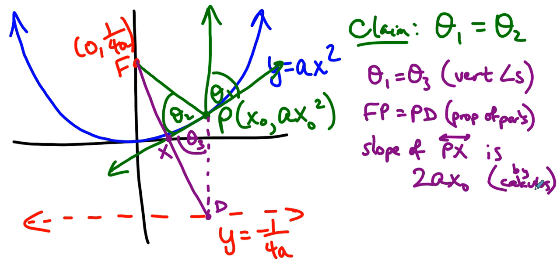So recapping, what have we done? We know that there's a ray coming in here. There's a segment that connects F to P. And we know that we can draw the perpendicular at P that intersects the directrix down here. And we know that those are vertical angles. And we know that FP is PD because parabolas work that way. Every point on the parabola is as far from the focus as it is from the directrix. And we know from calculus that this line has a slope of 2AX naught.